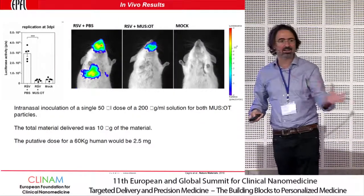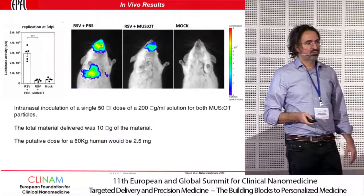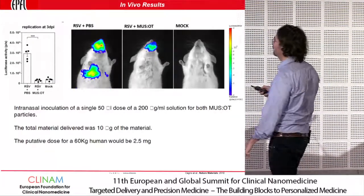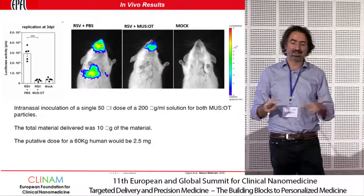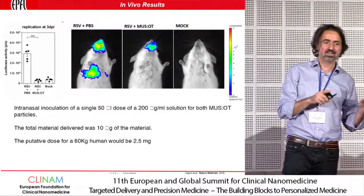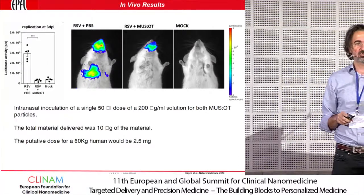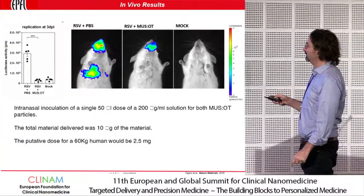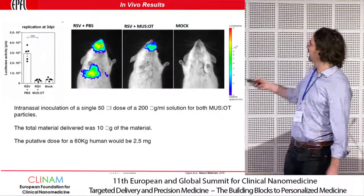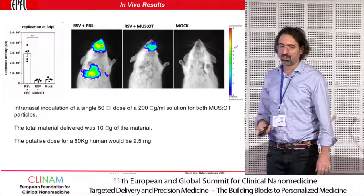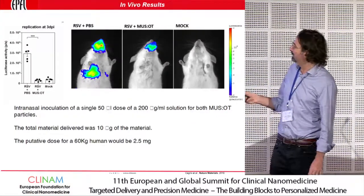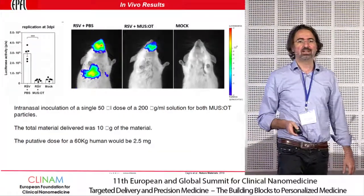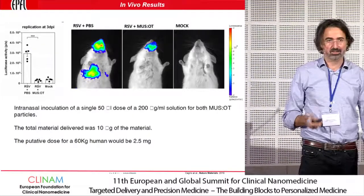This also works in vivo: intranasal injection in mice infected with respiratory syncytial virus — a virus that causes pneumonia-like infection and kills half a million people per year, against which we have no vaccine or drug. With a single intranasal injection of 10 micrograms of material, we achieve full protection of the mouse lungs. Scaled to a human, this corresponds to only 2.5 milligrams per single injection, suggesting we are on the right track.